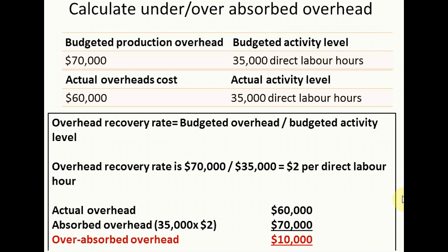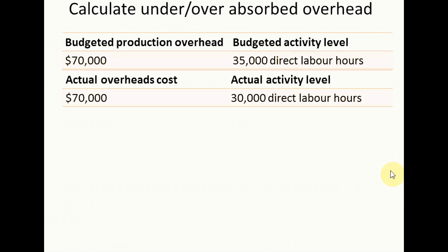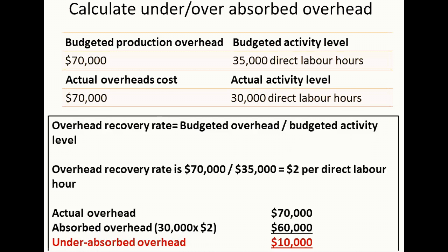Now let's look at an example where we see under-absorbed overhead. This company has a budgeted production overhead of 70,000, a budgeted activity level of 35,000 direct labor hours, actual overhead costs of 70,000, and an actual activity level of 30,000 direct labor hours.